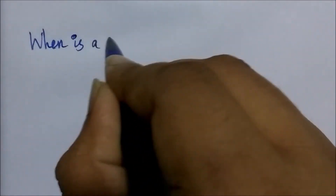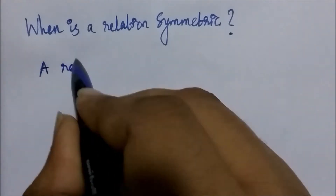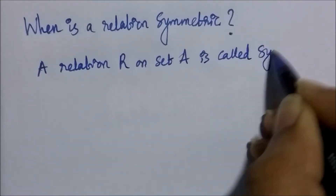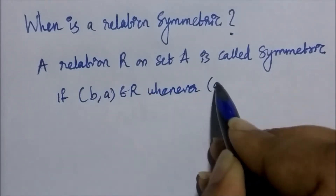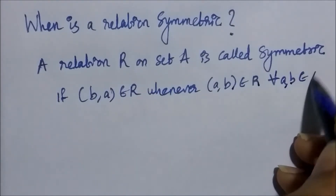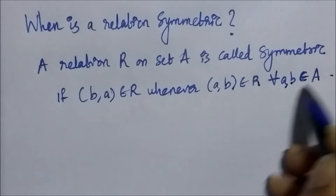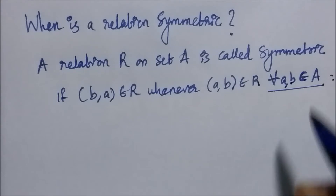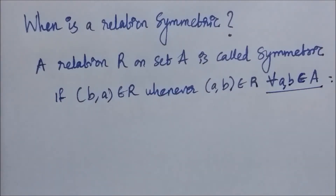Now when is a relation symmetric? A relation R on set A is called symmetric if (B, A) belongs to the relation whenever (A, B) belongs to the relation, for all A, B belonging to set A. Meaning that whenever (A, B) is present in a relation, then (B, A) should also be present for the relation to be symmetric.